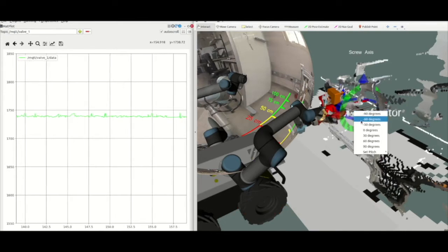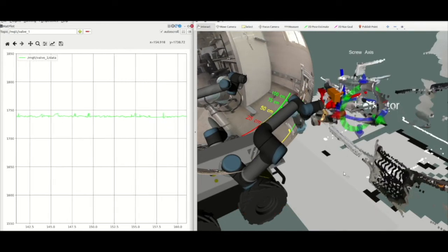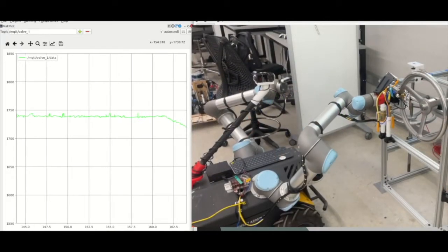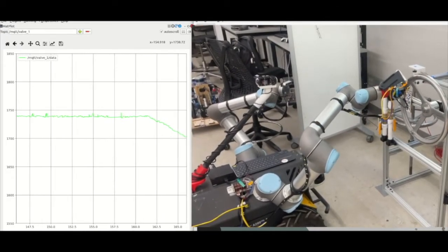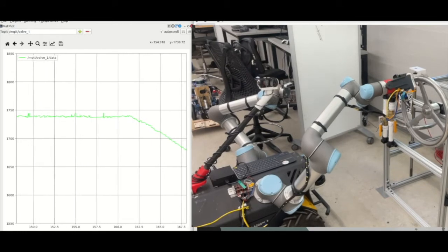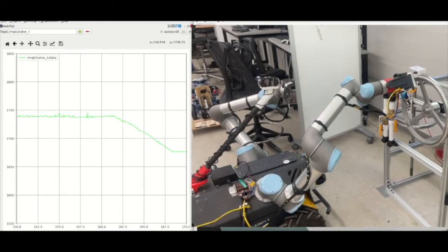Overall, our work represents a flexible way to reason about articulated object affordances in an object-centric way and allows manipulating these objects quickly even with uncertainty in the object's location or other task parameters.